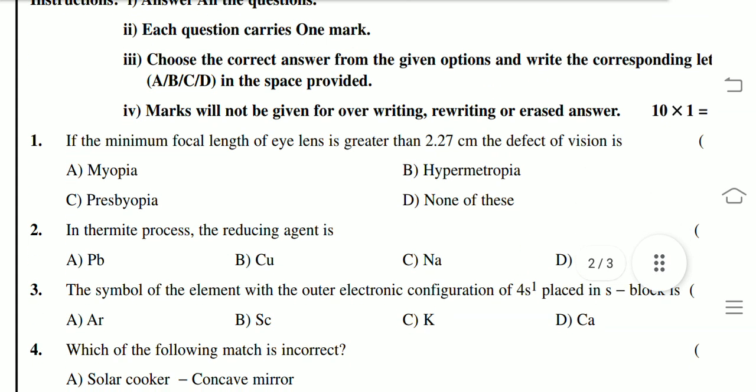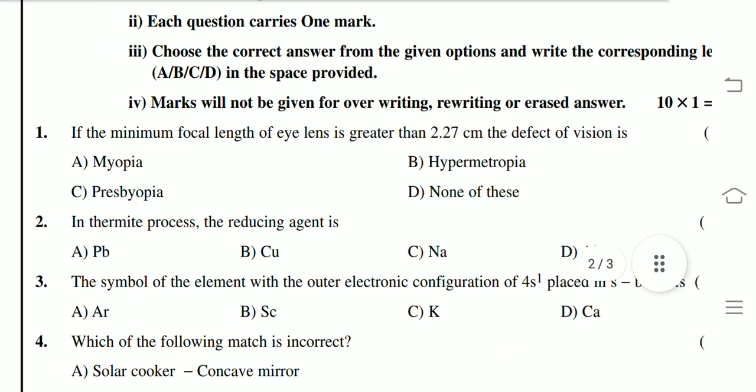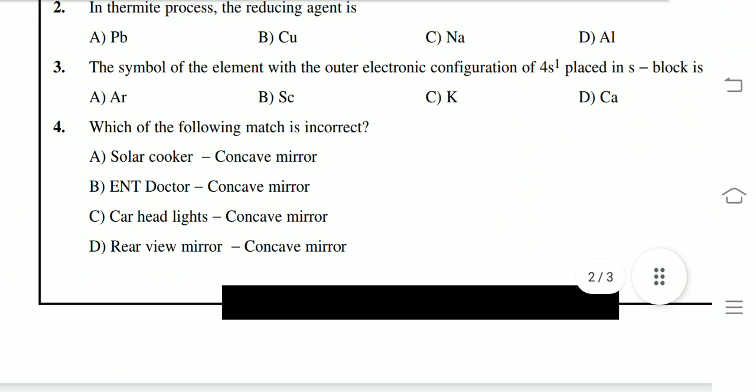Choose the correct answer. If the minimum focal length of eye lens is greater than 2.27 cm, the defect of vision is? In thermite process, the reducing agent is? The symbol of element with the outer electronic configuration 4s1 placed in block is? Which of the following match is incorrect?